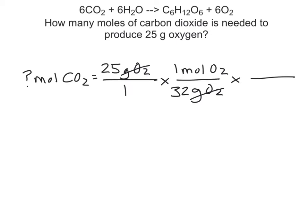I know from my balanced equation at the top that I have 6 moles of oxygen, so my 6 moles of O2 will go on the bottom. And I'm looking for carbon dioxide. Again, from my balanced equation, I see that I have 6 moles of CO2, so that will go on the top. Moles of O2 cancels, and I solve my problem by taking 25 divided by 32 times 6 divided by 6, and I get an answer of 0.78 moles of CO2.